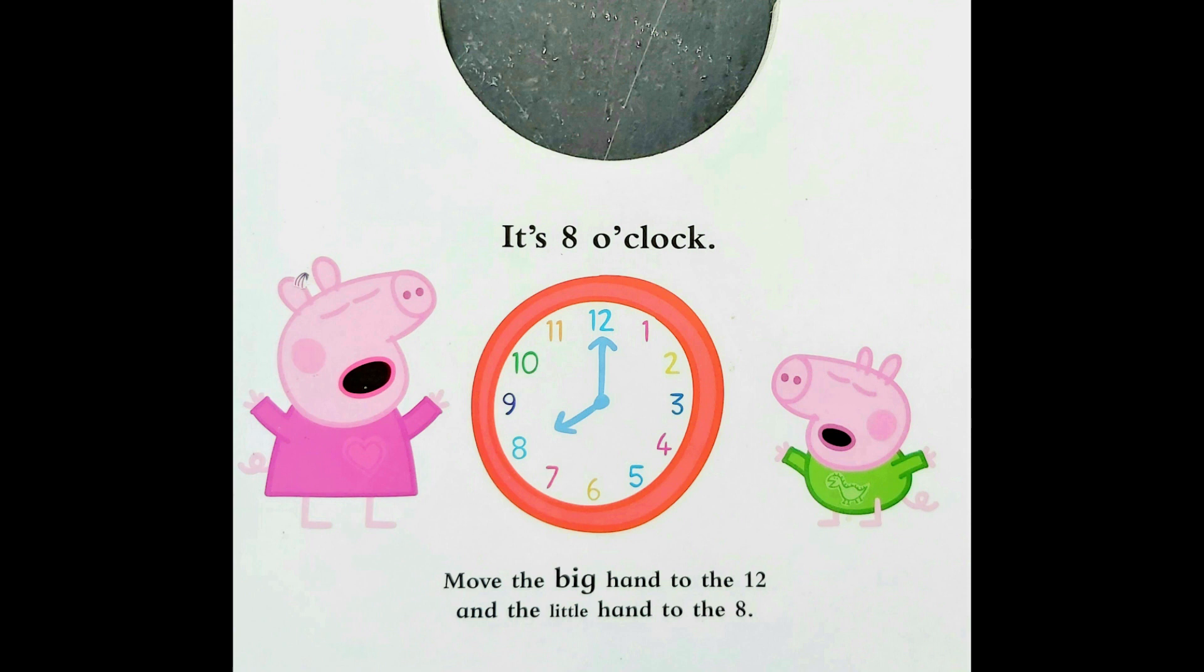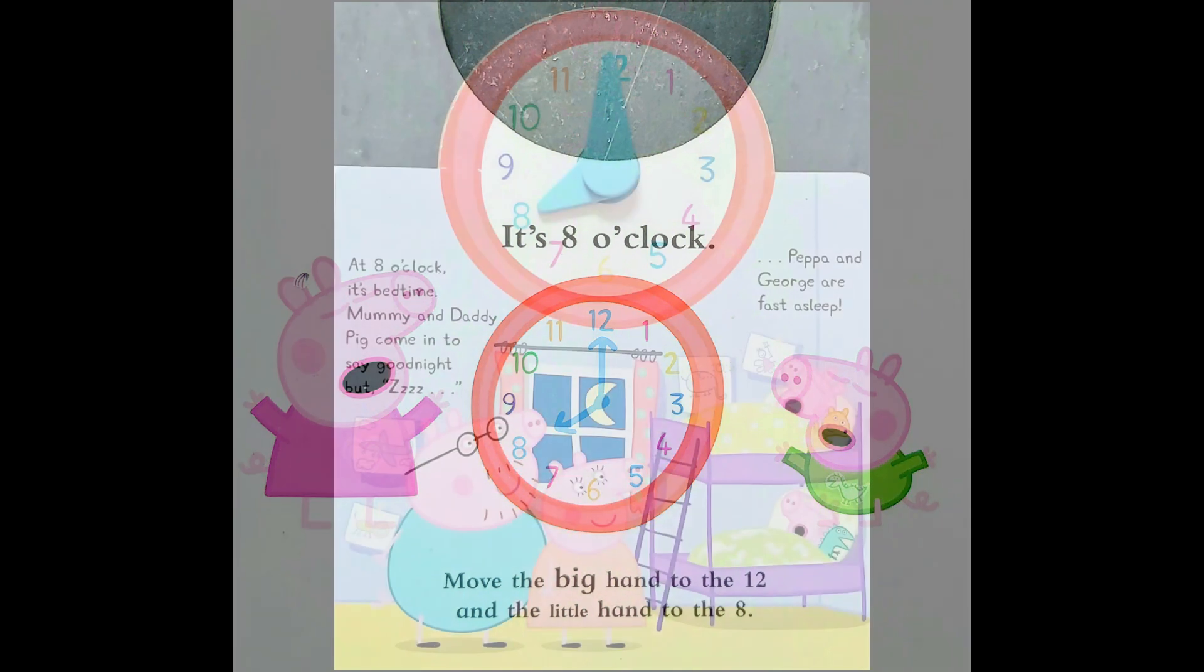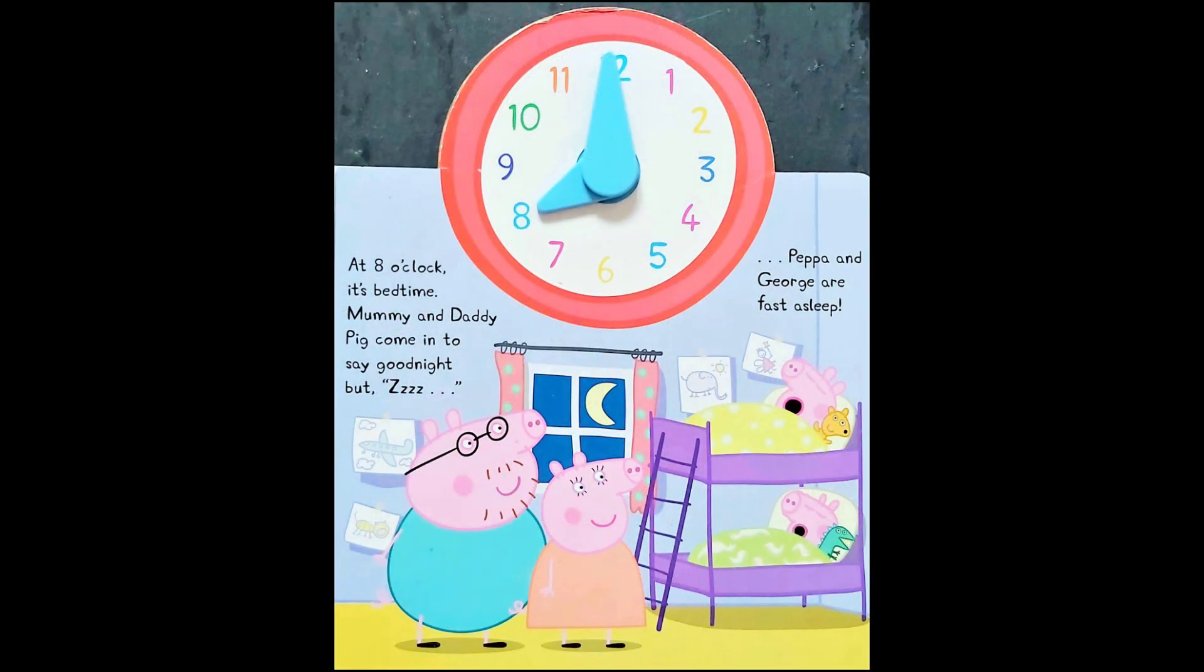It is eight o'clock. Move the big hand to the twelve and the little hand to the eight. At eight o'clock, it's bedtime. Mommy and Daddy Pig come in to say goodnight. But Peppa and George are fast asleep.